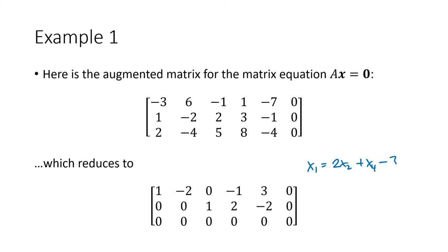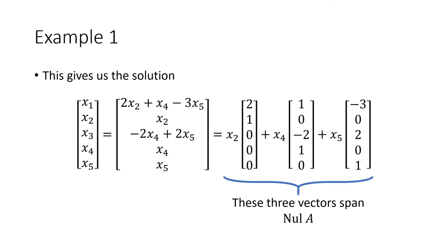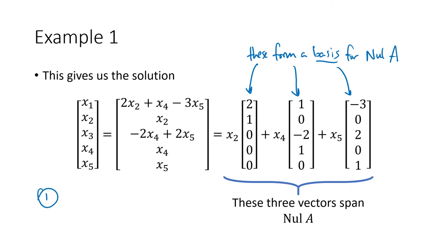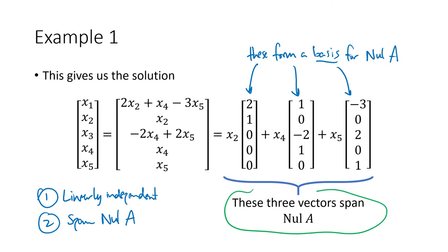That's the general solution, but we write it in parametric form. As we've seen before, the three vectors in the parametric solution form a spanning set for the null space of A. I claim these three vectors actually form a basis. The two conditions are: first, these vectors must be linearly independent; and second, they must span the null space of A. The second condition we already have — these three vectors span the null space of A.